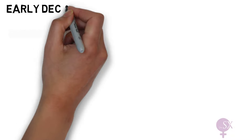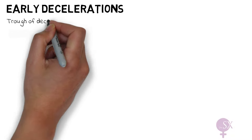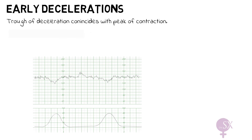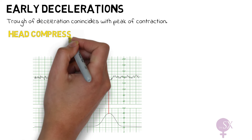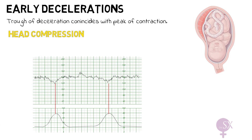Starting off with early decelerations: the trough of the deceleration coincides with the peak of the contraction. Early decelerations start when the uterine contraction begins and recover when the uterine contraction stops. They are secondary to head compression. During a uterine contraction, there is an increase in fetal intracranial pressure, which results in increased vagal tone, decreasing the heart rate. The deceleration then quickly resolves once the uterine contraction ends. These are relatively uncommon and are considered physiological and not pathological, so they are nothing to worry about.